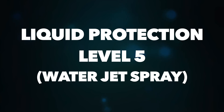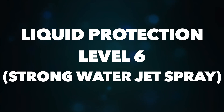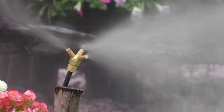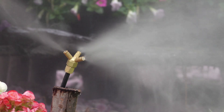Level 5 is protected against jet sprays from any direction — all 360 degrees. Level 6 is protected against strong jets of water spray from all directions, meaning the device can withstand heavy rain or powerful water jets from any angle.